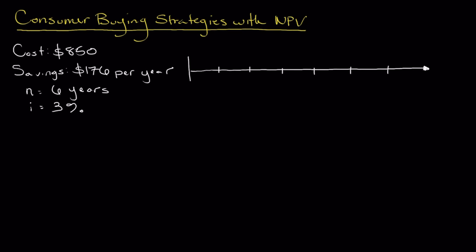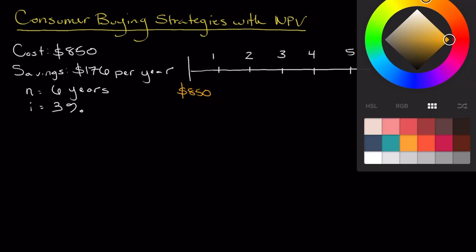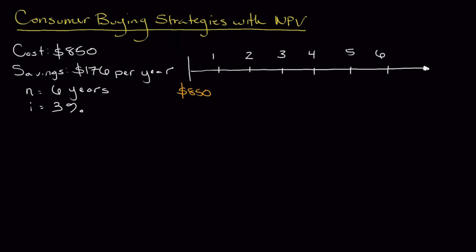These are each of the number of years, and the upfront cost is going to be $850. This is how much it's going to cost us initially. However, we're going to save $176 each year. So what we're trying to determine is collectively if each of these $176 in savings each and every year, how that compares to this original $850.